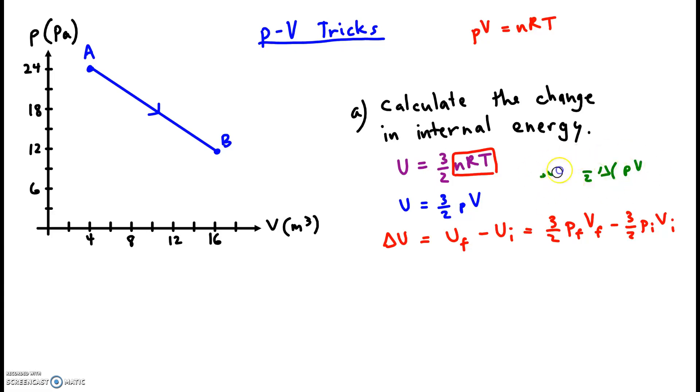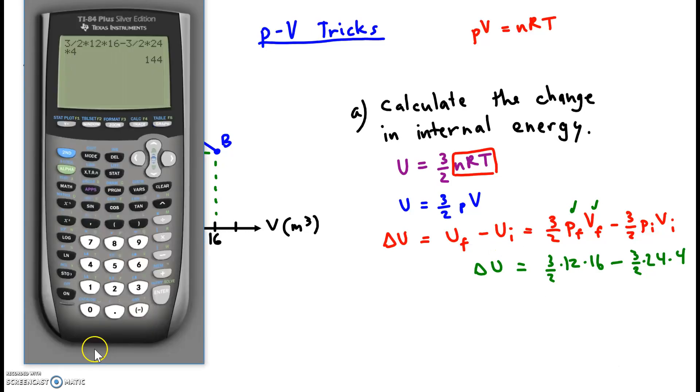This is something we can solve because we look at the graph to find the values of the final pressure and volume. That's going to be 16 for the final volume, 12 for the final pressure. And we look at the graph to find the initial volume and the initial pressure. Those values are 24 for the pressure and 4. So now we calculate the change in internal energy. When I do this on my calculator, I get 144 joules.